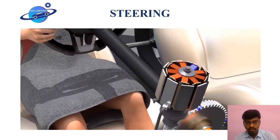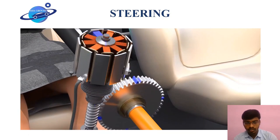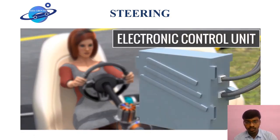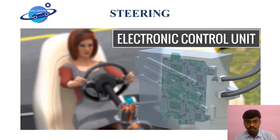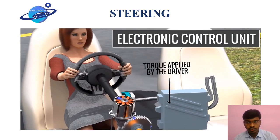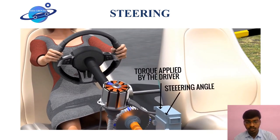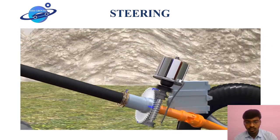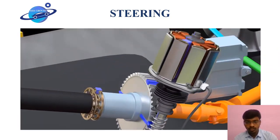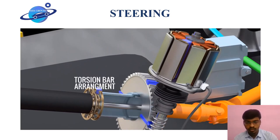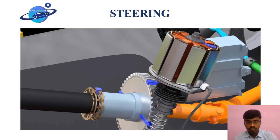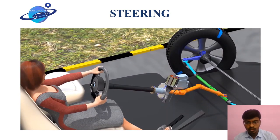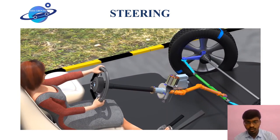The motor is capable of rotating in both clockwise and anti-clockwise directions. An electronic control unit (ECU) decides the amount of power the motor should transfer to the column. The ECU takes inputs such as the torque the driver applies to the steering wheel, the steering angle, steering wheel speed, and vehicle speed, then decides the appropriate torque to supply. A Hall effect sensor and torsion bar arrangement is used to measure the driver's torque input, making steering wheel rotation effortless.